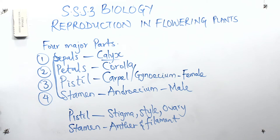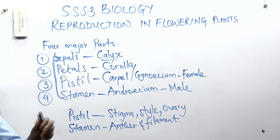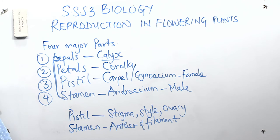Why do we need to know this? In your biology practical, you may be given a flower and asked to describe it. One of the terms you can use is: if the flower has all four parts, describe it as a complete flower. If any part is missing, describe it as an incomplete flower.